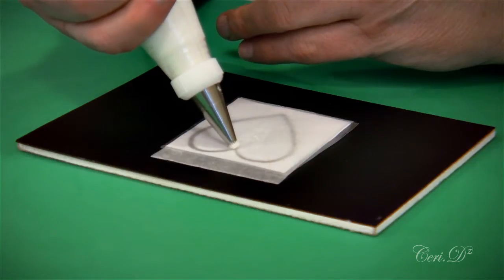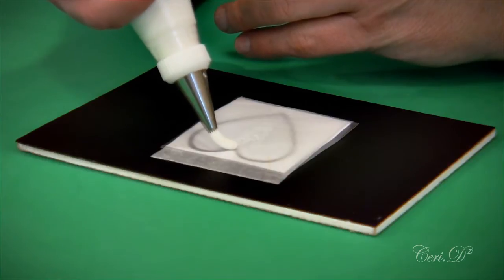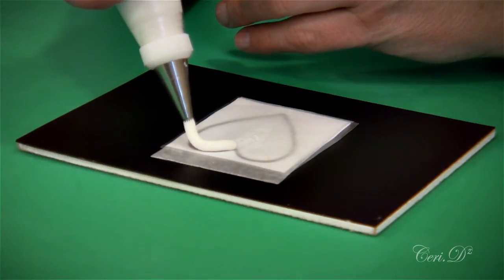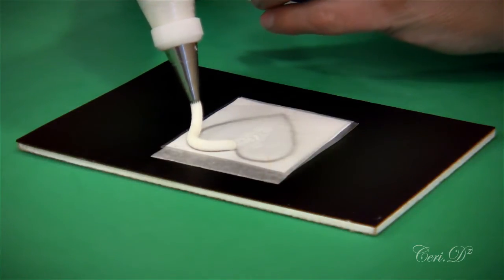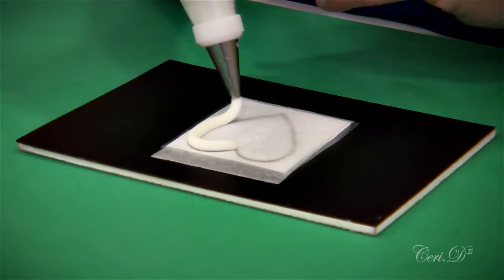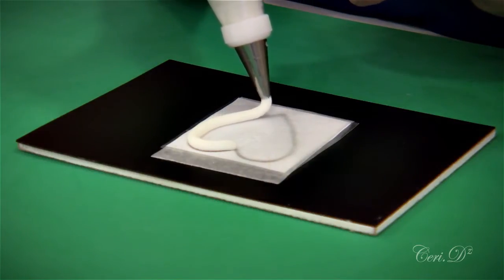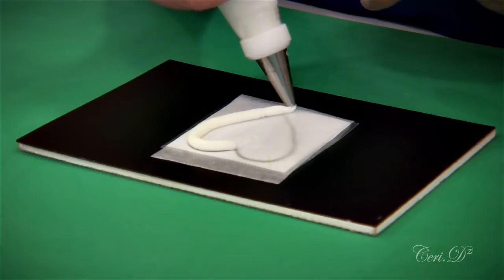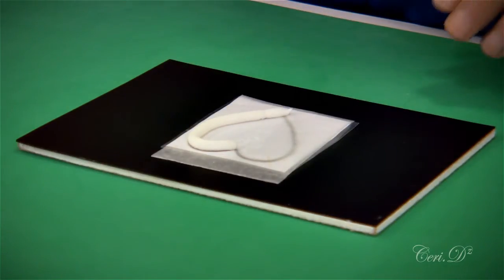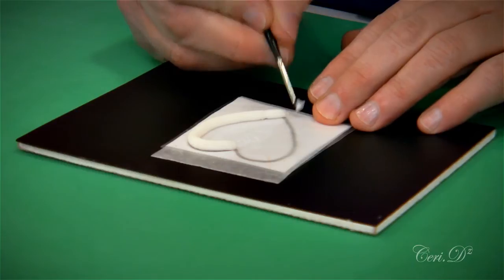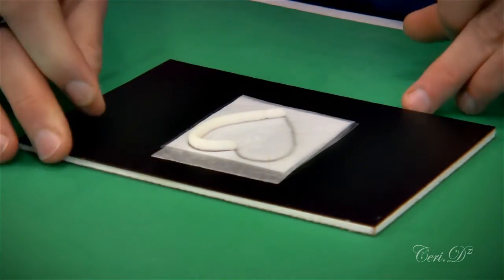Starting at the top of the heart, I'm going to pipe over the top of the heart all the way down to the peak. When I get down to the peak, I'm going to stop squeezing and finish off my line. If I've overshot the line slightly, I will use a small paintbrush to tidy it up.